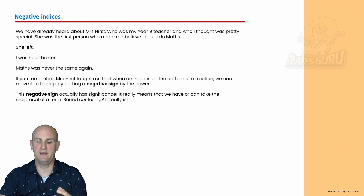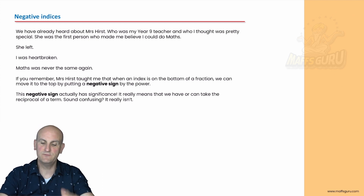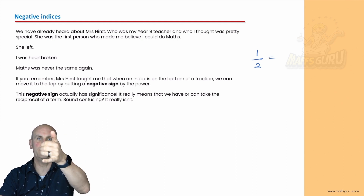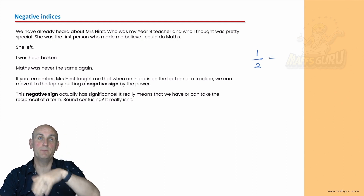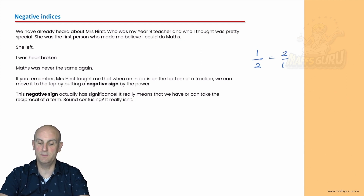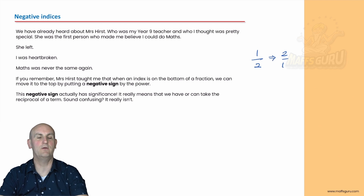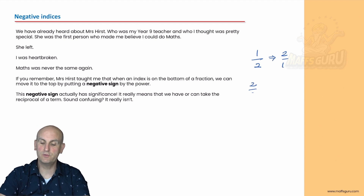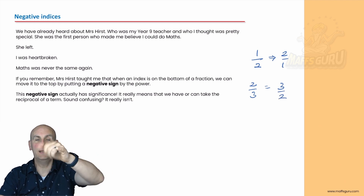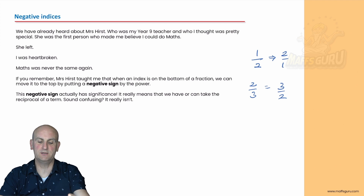Now if you understood anything about maths — when we take a reciprocal, so if I had for example the reciprocal of a half, we take the bottom and we flip it. What was the bottom becomes the top, or the top becomes the bottom. So that would become two over one — that would be the reciprocal. Two thirds would become three on two. You literally take what's on the bottom and you put it on the top. So we've done that with fractions.